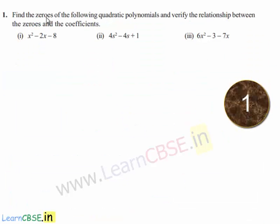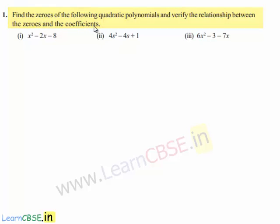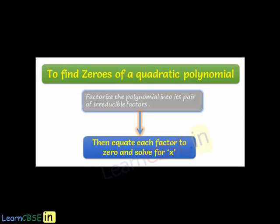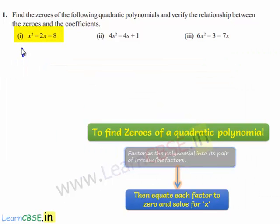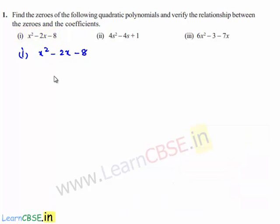Coming to the first problem: find the zeros of the following quadratic polynomials and verify the relationship between the zeros and the coefficients. The first polynomial given to us is x² - 2x - 8. In order to find the zeros of the given quadratic polynomial, we need two integers such that their sum must be equal to -2 and product must be equal to -8.